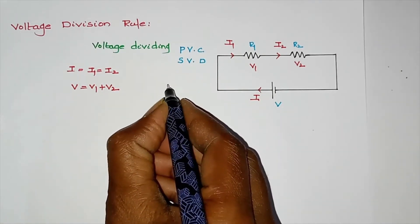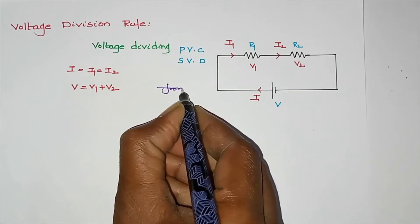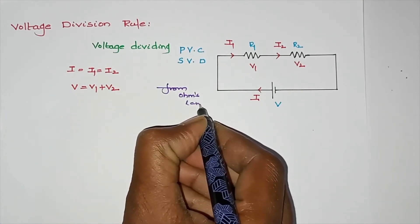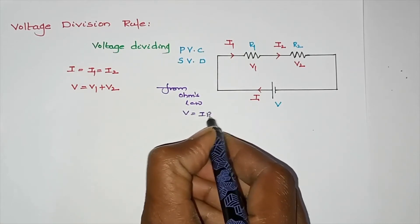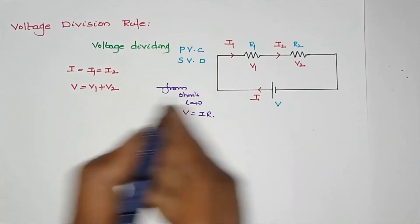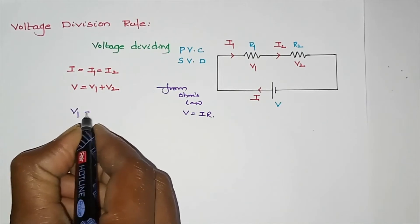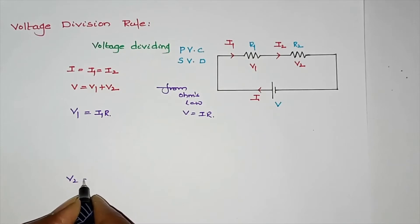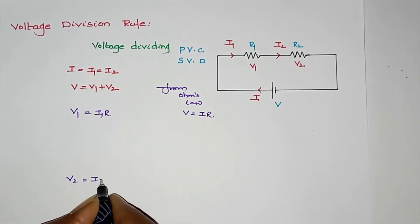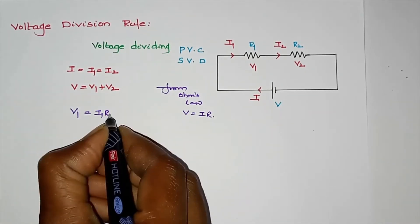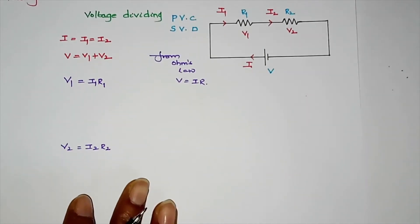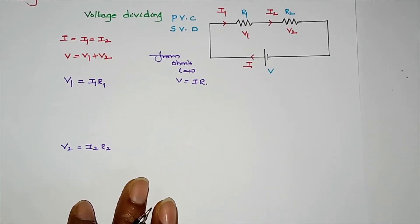The total voltage equals the sum of individual voltage drops. From Ohm's law, v1 equals i1 times R1, and v2 equals i2 times R2. So v1 and v2 are the voltage drops across R1 and R2 respectively.